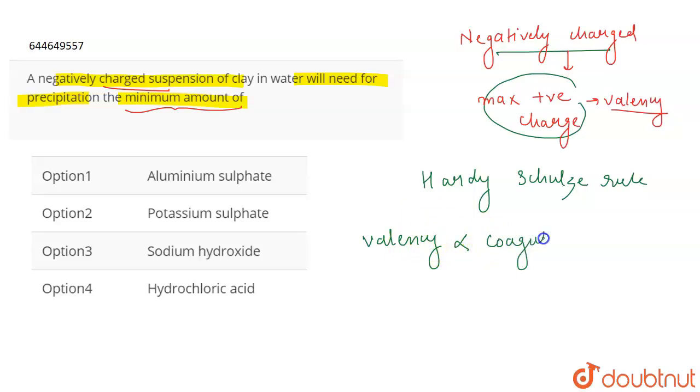More is the charge on the cation, that is the valency, more will be the coagulating power and less will be the coagulation value. It means that less amount will be required. Coagulation value is the amount required to coagulate that sol. So if the coagulating power is more, the amount required will be less.